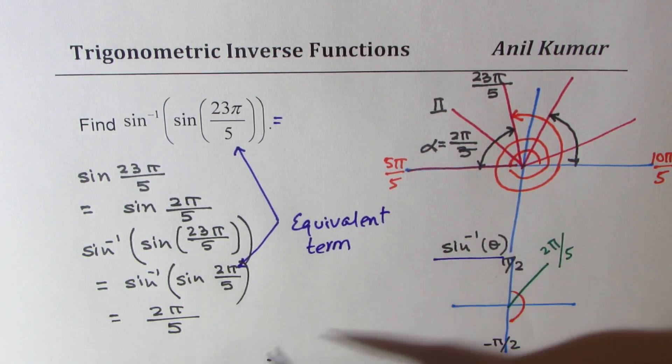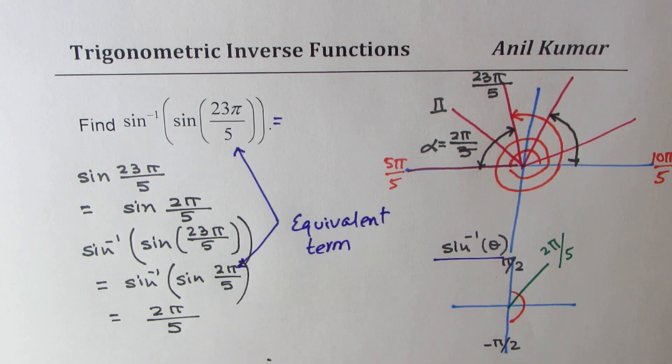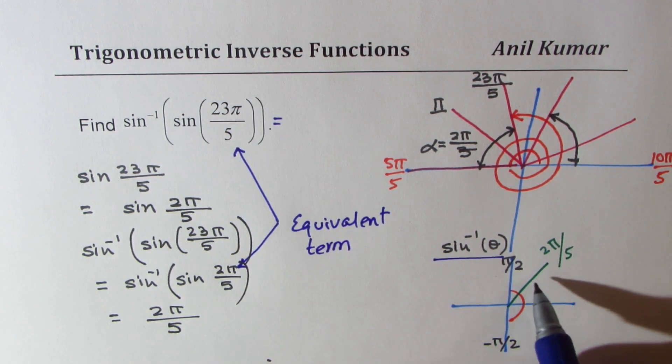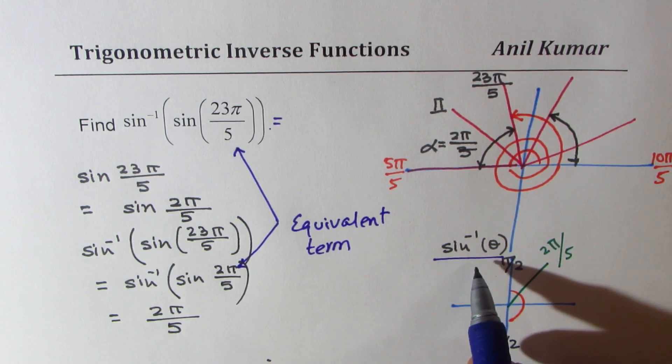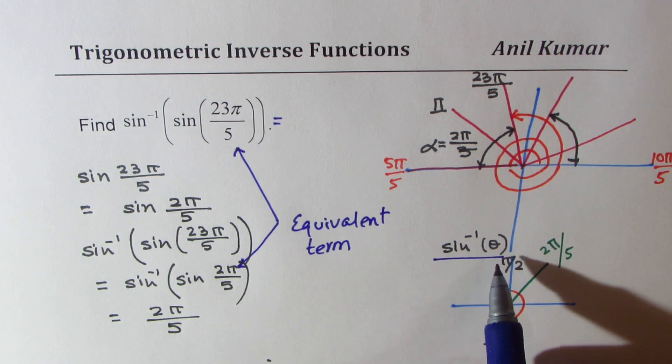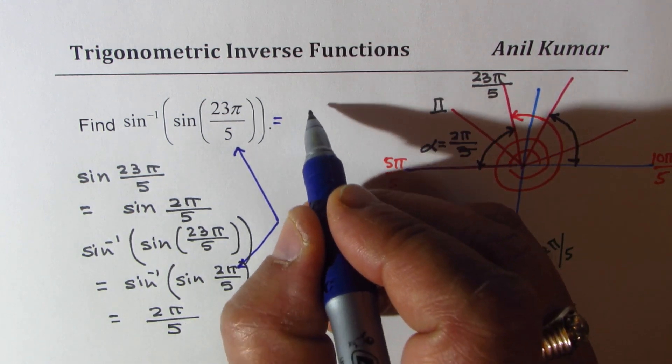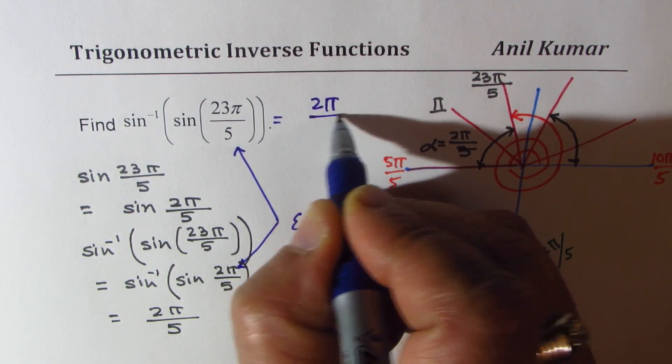You can say term, which is 2π by 5. And now 2π by 5 is within the domain of sine inverse θ. And now we get the answer as 2π by 5.